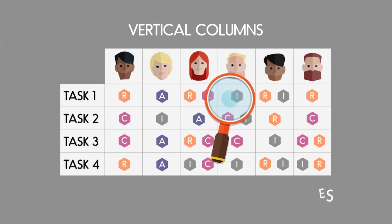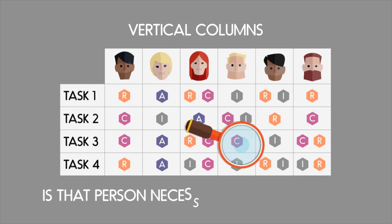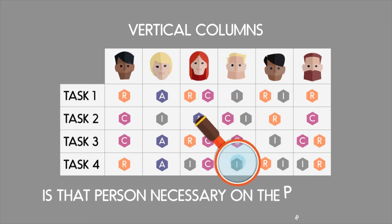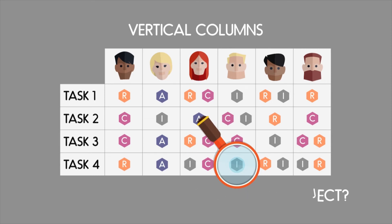If there are no Rs or As in any one column, is that person necessary on the project? Is their time being utilized wisely on that particular project?